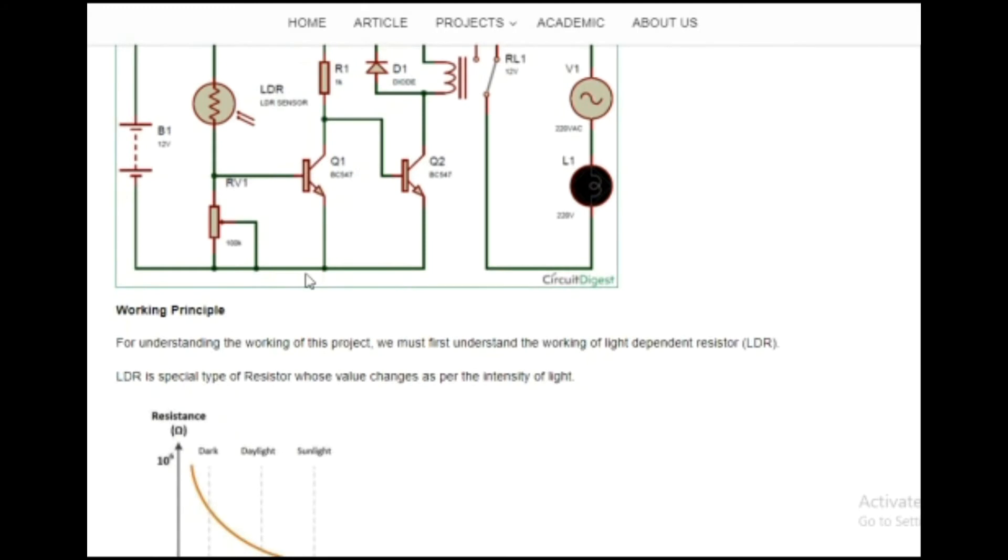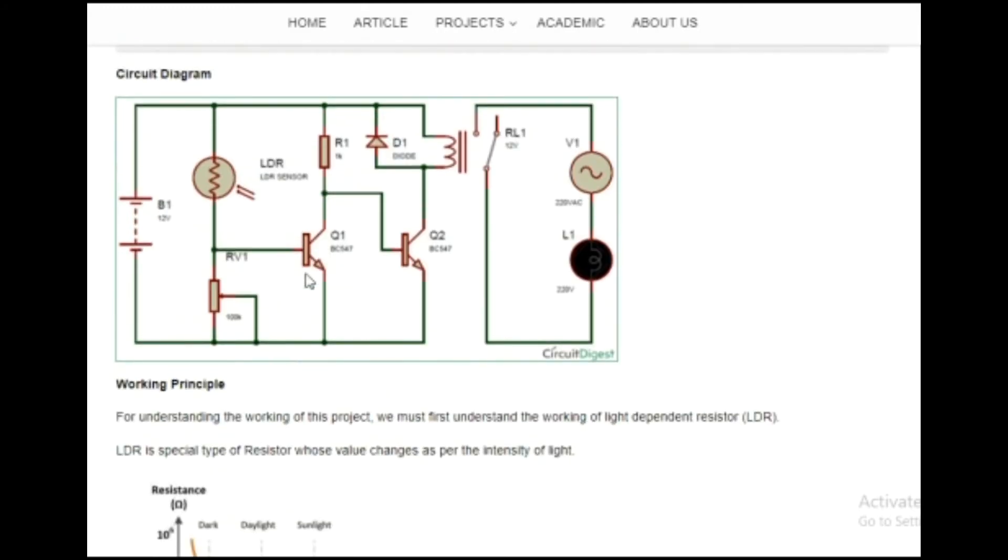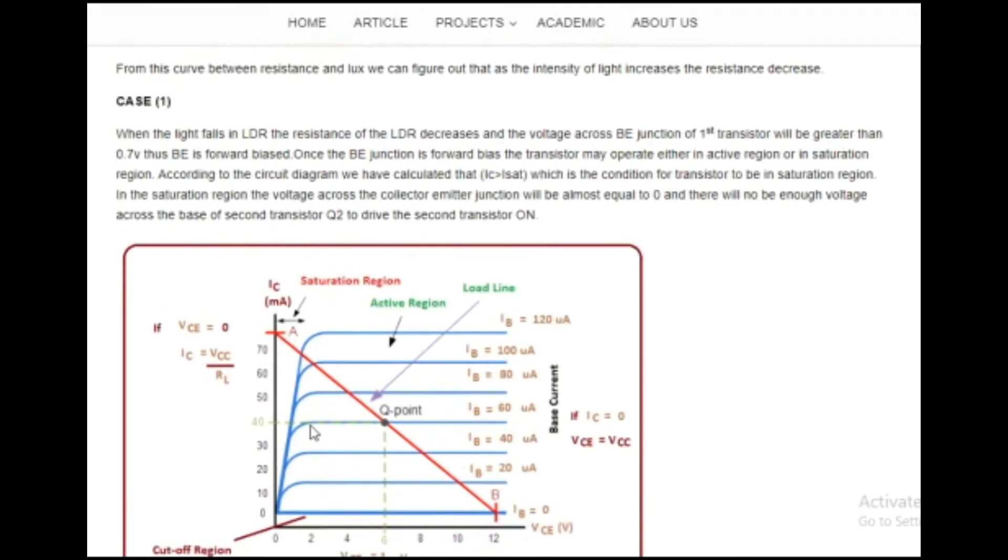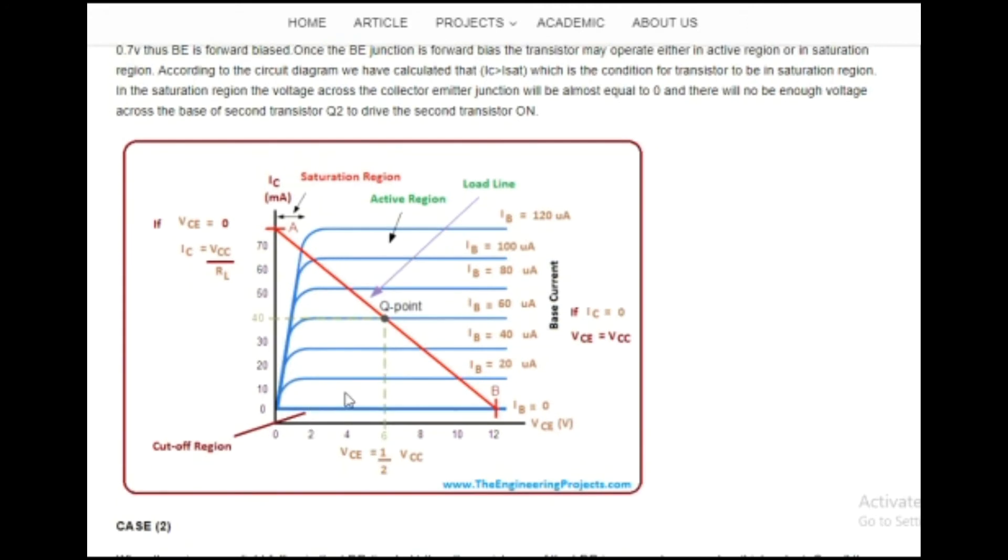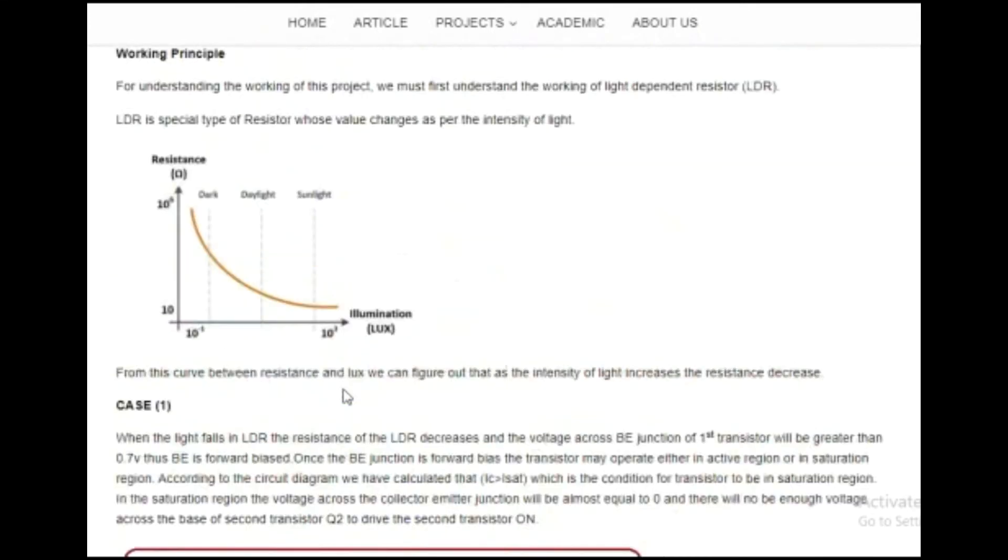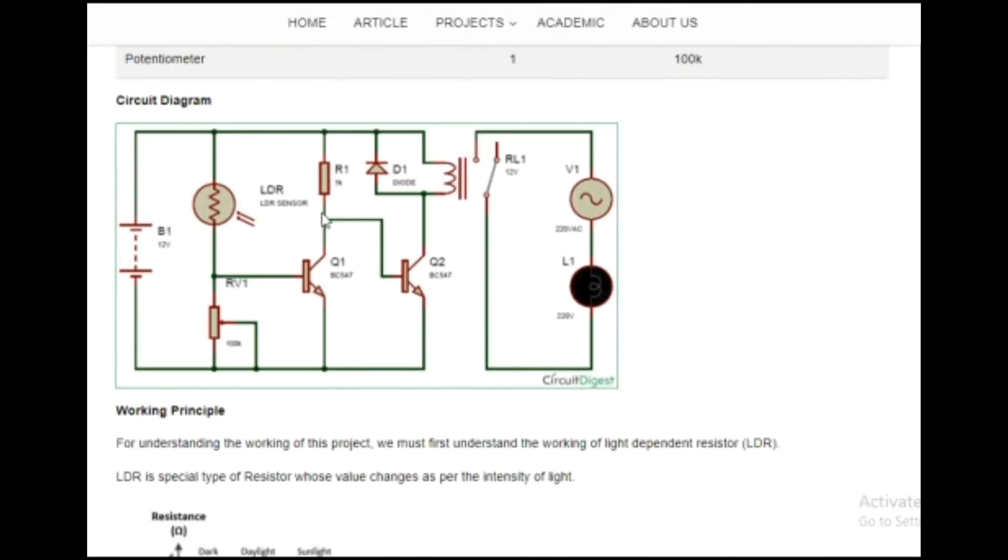After the calculation, we have found that the collector current is greater than the saturation current. So this transistor will be in saturation region. In the saturation region, from this curve, we came to know that voltage across collector-emitter junction is almost negligible. So there will be no voltage passing through this junction, and this will not forward bias the second transistor and our relay will not be on.